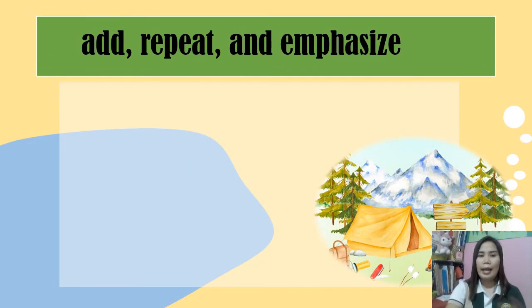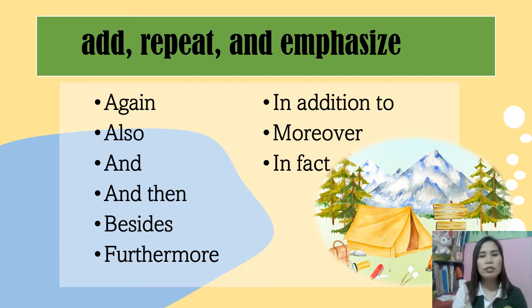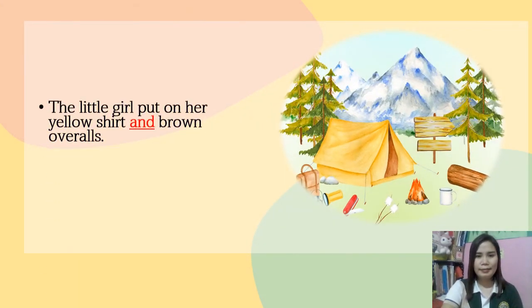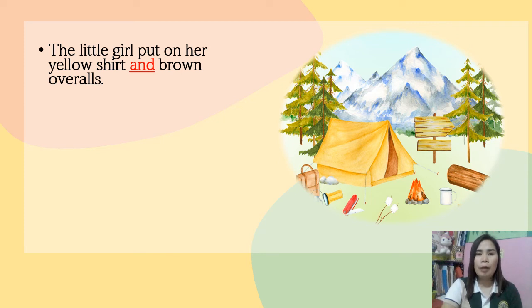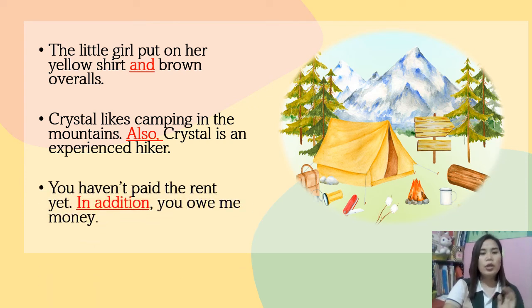For add, repeat, and emphasize, examples include: again, also, and, and then, and many more. These transitions tell you that the writer is presenting two or more ideas that continue along the same line of thought. Examples: 'The little girl put on her yellow shirt and brown overalls.' 'Crystal likes camping in the mountains; also, Crystal is an experienced hiker.' 'You haven't paid the rent yet; in addition, you owe me money.'